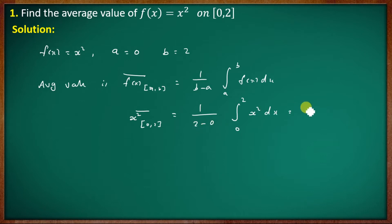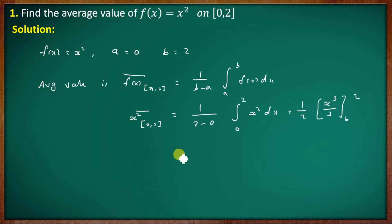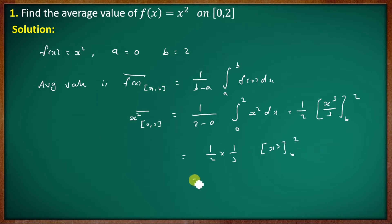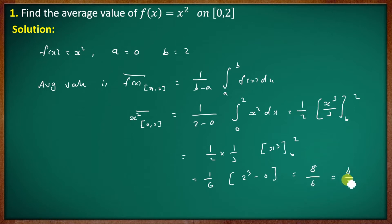Evaluating: (1/(2−0)) · [x³/3]₀² = (1/2) · (1/3) · [x³]₀² = (1/6) · (2³ − 0) = (1/6) · 8 = 8/6 = 4/3. The average value is 4/3.